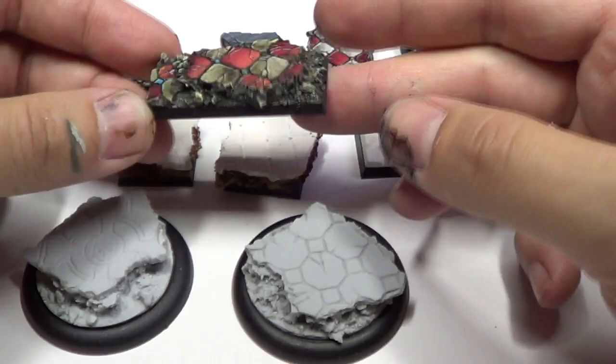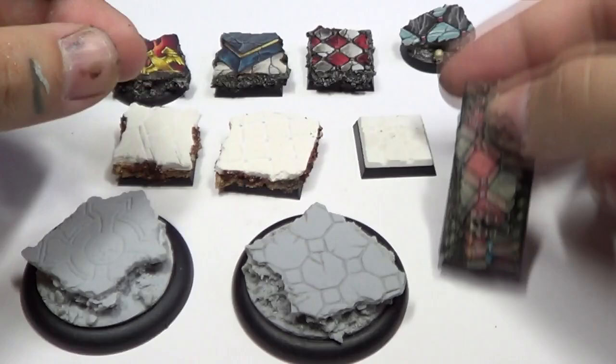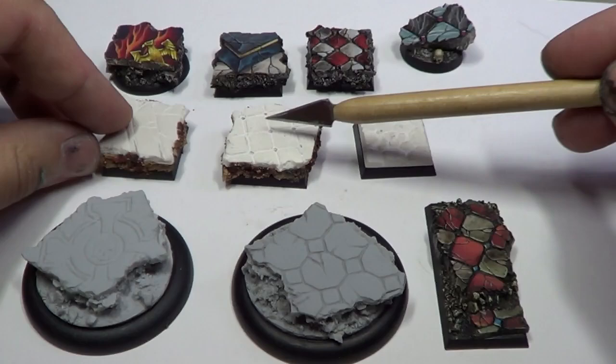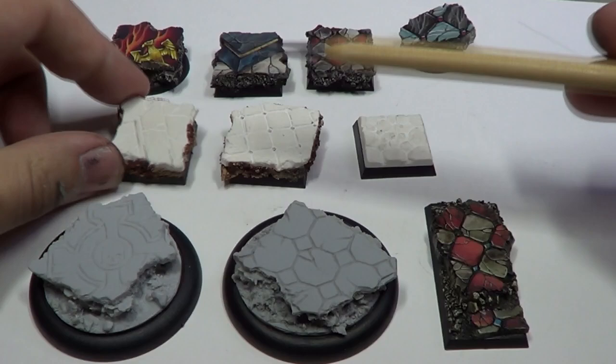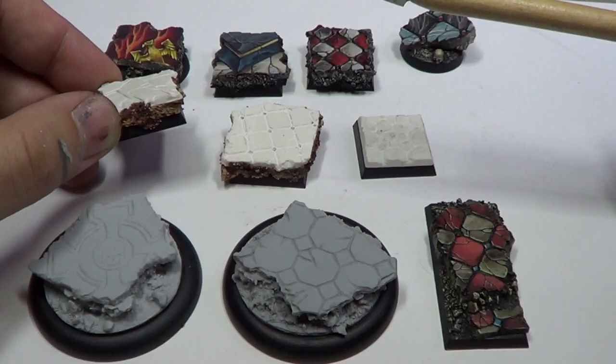And it also works on cavalry bases, large creature bases. Again, the idea is to take a basic pattern and use it multiple ways. So the next thing we're going to cover is types of sculpey, different types of cork, and your rocks and gravel.